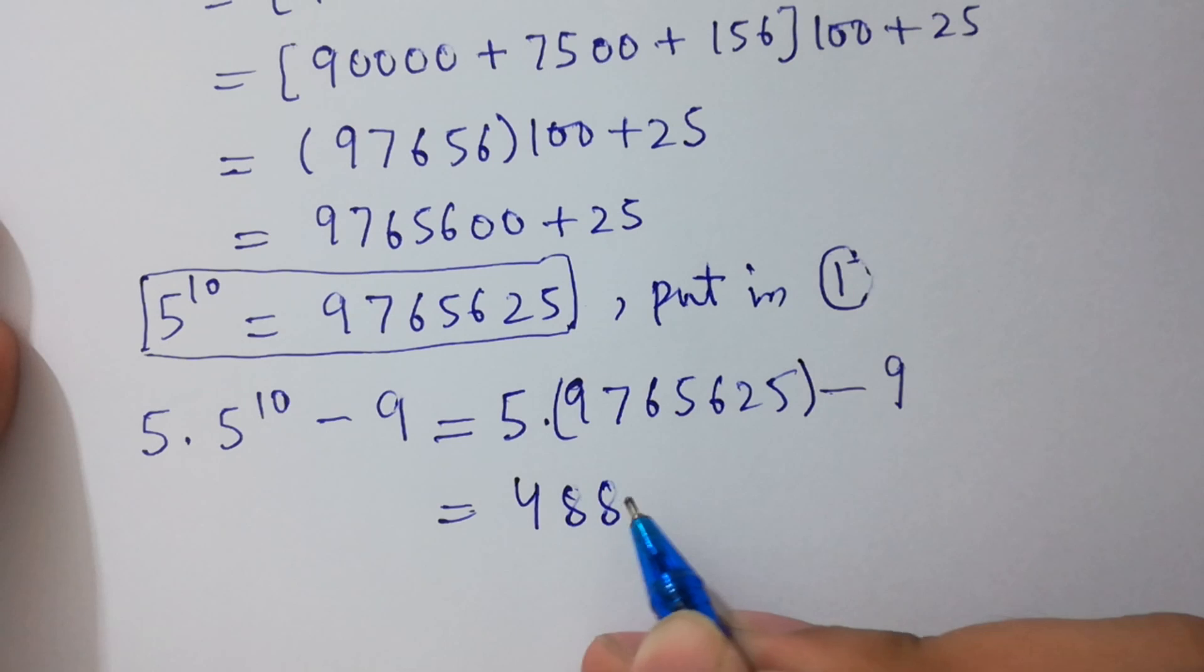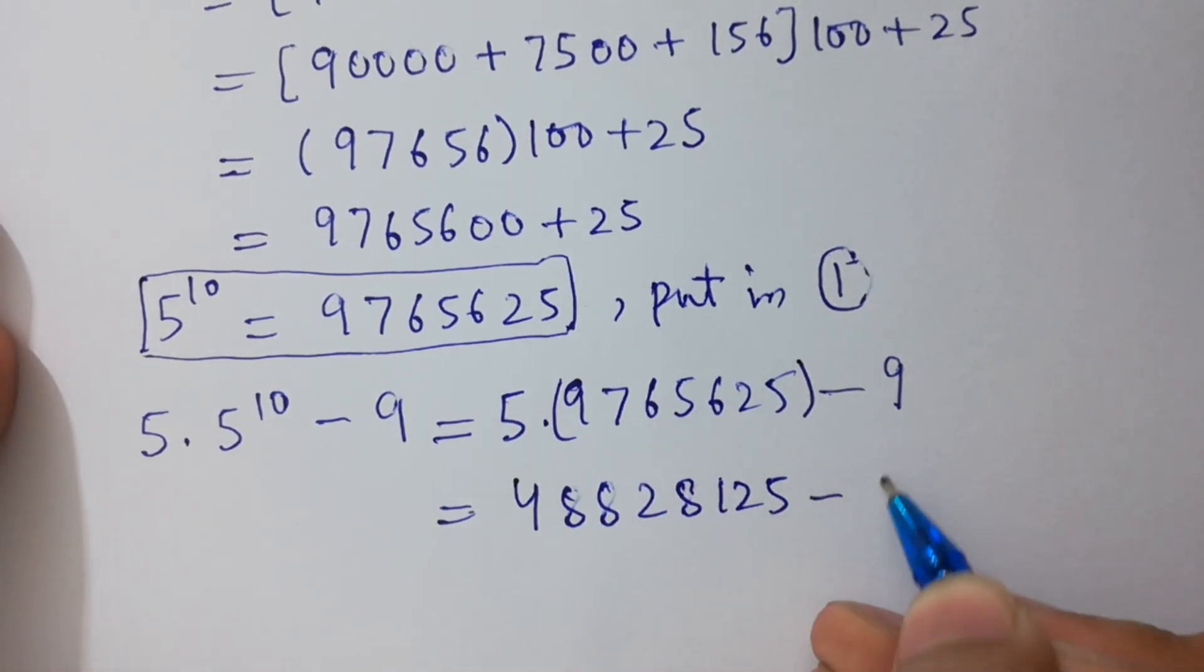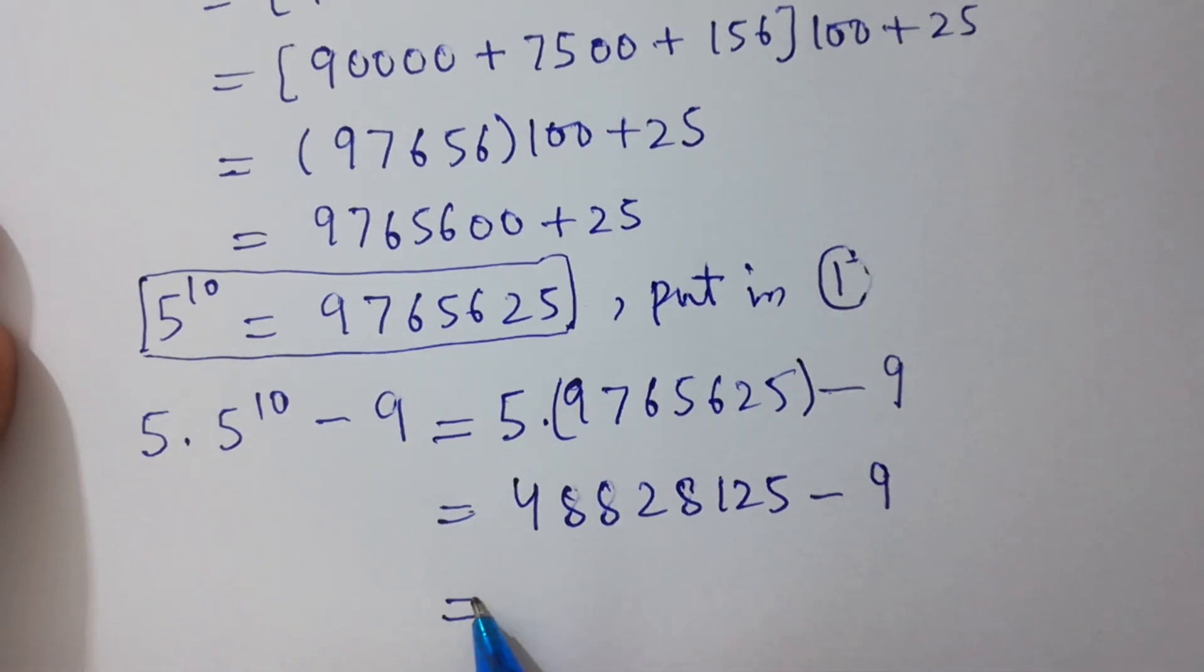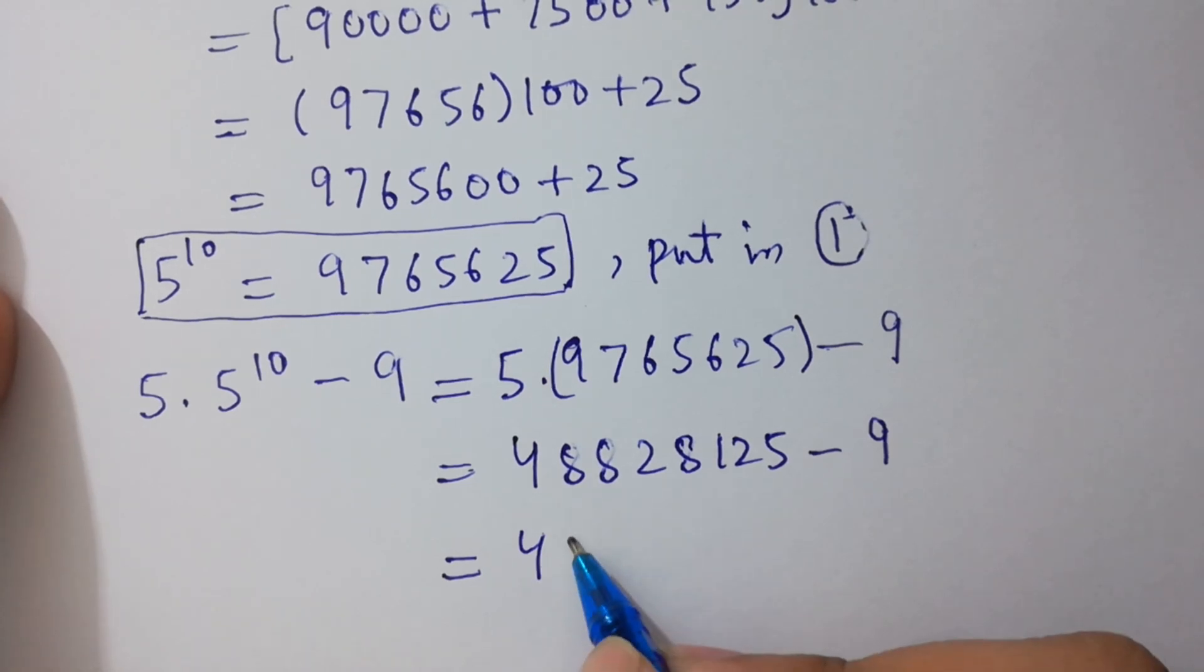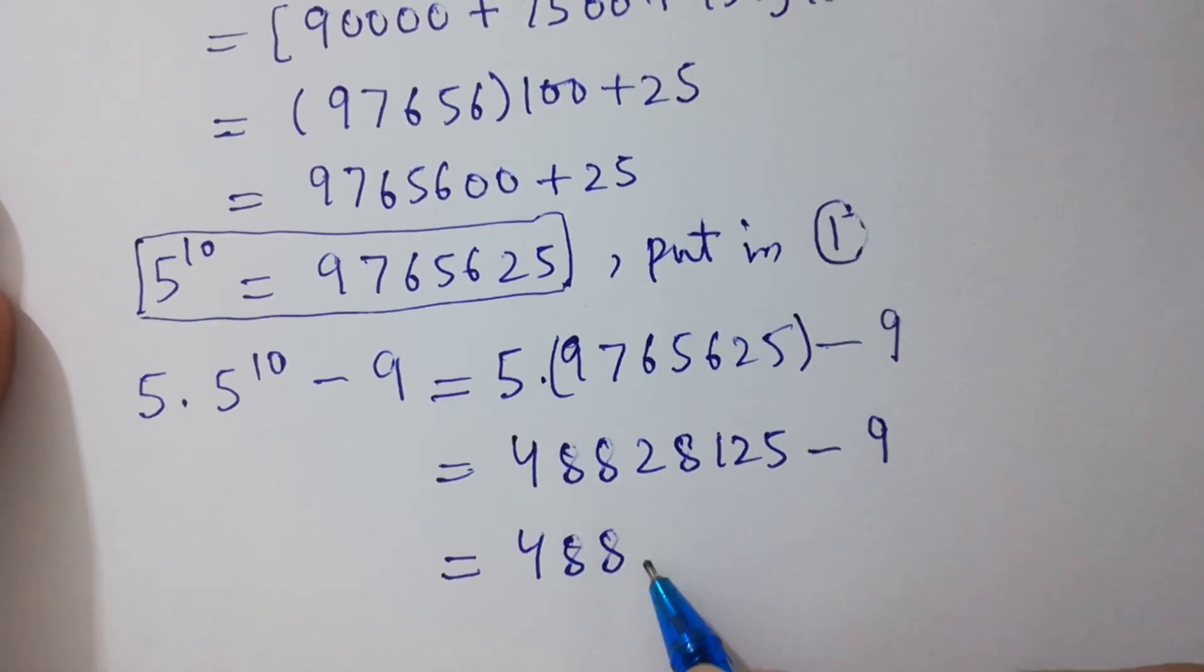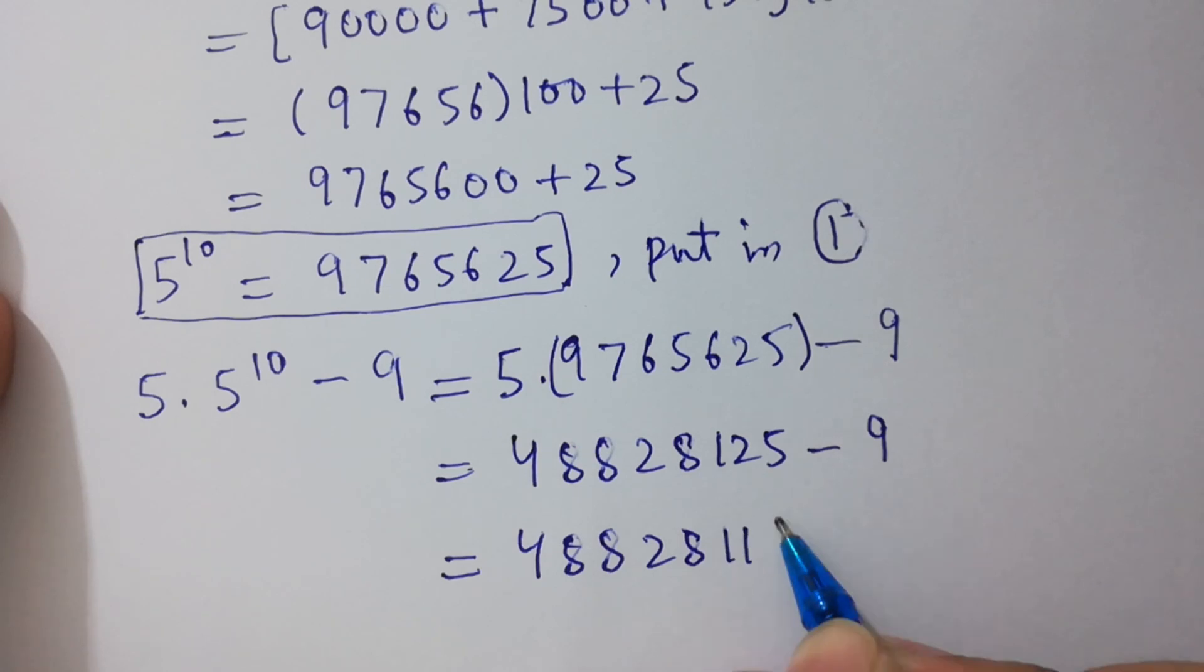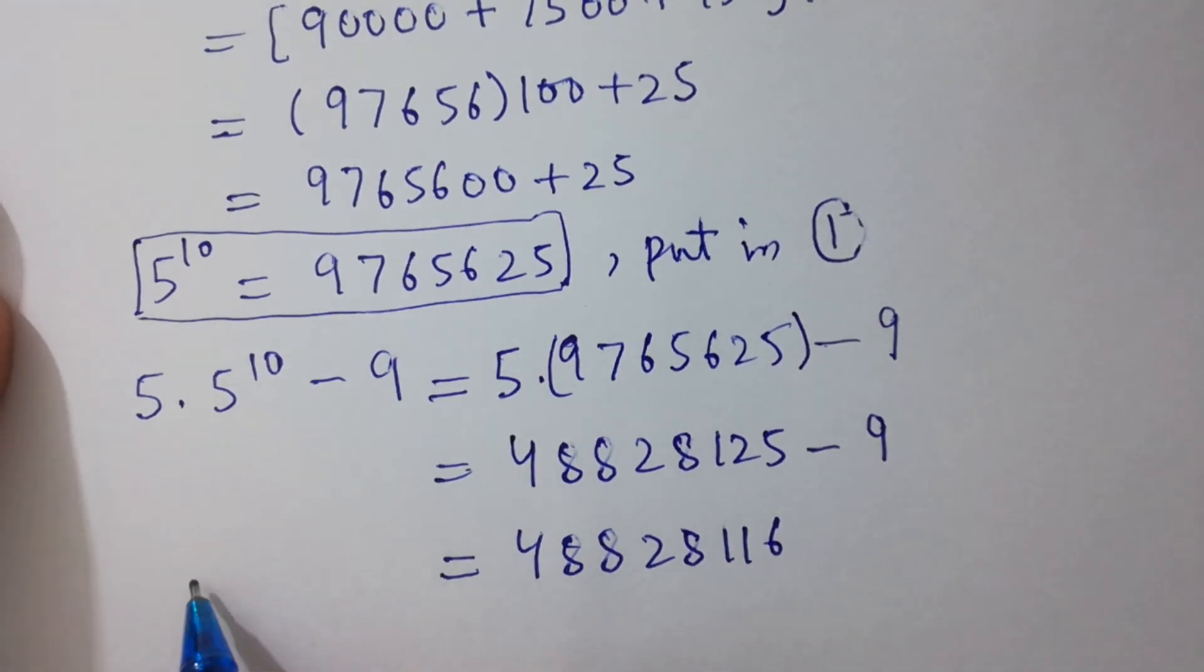Minus 9 we get 48,828,116. So 5 to the power 11 minus 3 square...